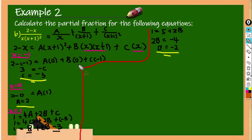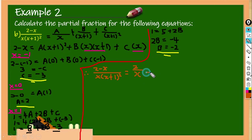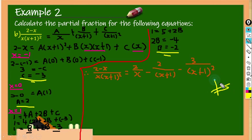Therefore, 2 minus x over x times x plus 1 squared equals 2 over x, minus 2 over x plus 1, minus 3 over x plus 1 squared. This is our final answer.